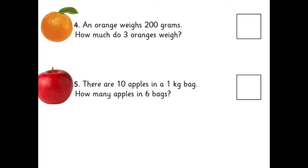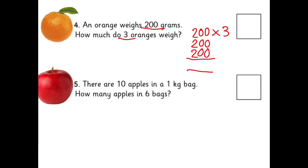An orange weighs 200 grams. How much do 3 oranges weigh? You're counting in 200s — what you need to work out is 200 times 3. You could write them in columns: there are 3 200s. Can you add those up to get the answer? Remember the answer will have a G because it's grams. There are 10 apples in a 1 kilogram bag — how many apples are in 6 bags? That's quite an easy times.